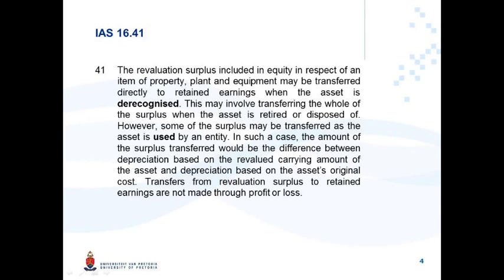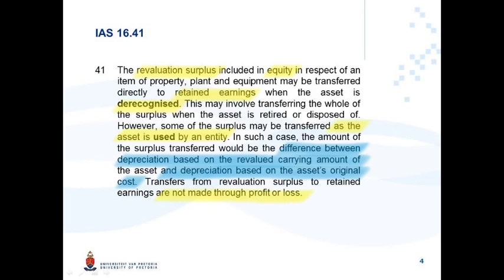IAS 16 paragraph 41 states that the revaluation surplus included in equity in respect of an item of property, plant and equipment may be transferred directly to retained earnings when the asset is de-recognized. This may involve transferring the whole of the surplus when the asset is retired or disposed of. However, some of the surplus may be transferred as the asset is used. In such a case, the amount transferred would be the difference between depreciation based on the revalued carrying amount and depreciation based on the asset's original cost. Transfers from revaluation surplus to retained earnings are not made through profit or loss.